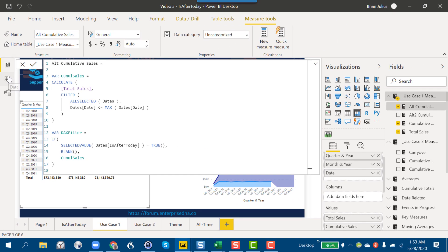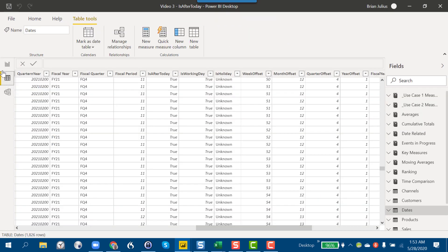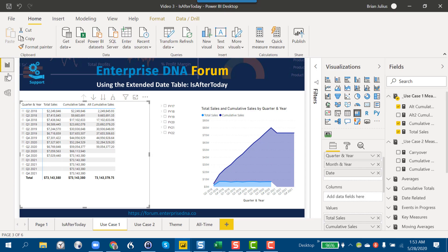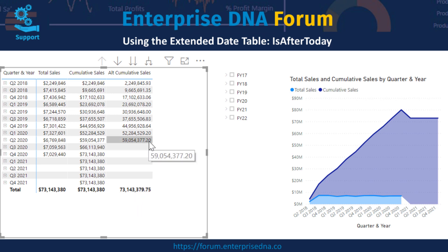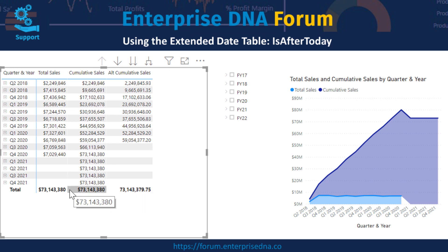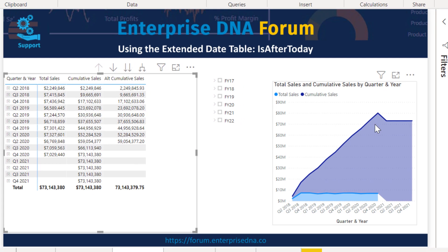If we go back and look at that, we can see that row by row it returns the right value. But we've got a problem: the total is wrong. The total should be 59 million, but it ends up being 73 million — all of the cumulative totals through the end of the data. So we've got a little more work to do.